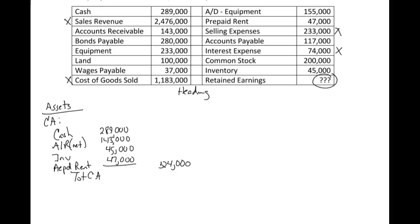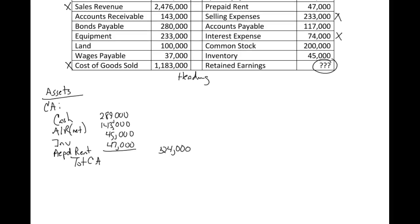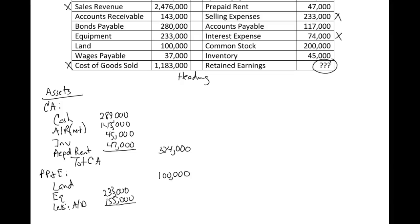Next we're going to do our non-current section — I'll call it property, plant, and equipment, though you could also see it called non-current assets or long-term assets. We have land at $100,000. Remember, land we don't depreciate. Then we have equipment at $233,000 — that's the historical cost. The book value is cost less accumulated depreciation, and accumulated depreciation was $155,000, so the book value of the equipment is $78,000.